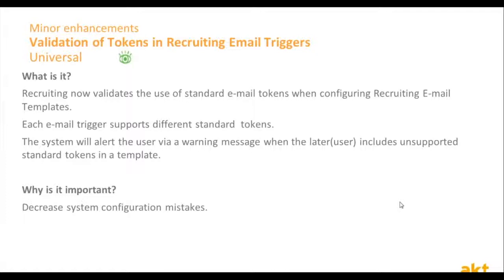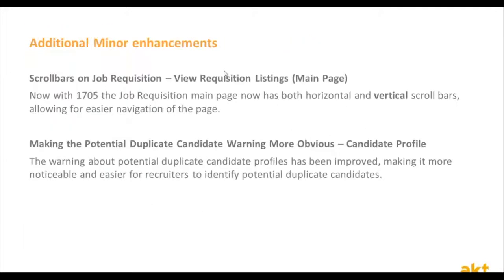A few additional minor enhancements are the scroll bars in the job requisition screen. Till now, if you had a very long list of job requisitions and a very long list of columns within each requisition, you had a lot of problems navigating in this screen — you couldn't find a vertical scroll bar. From this day on, both scroll bars are valid and visible on screen at all times.